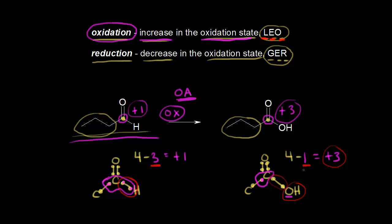There's also a shortcut you can use for this reaction. On the left, this carbon with an oxidation state of plus one has two bonds to oxygen. On the right, that same carbon now has three bonds to oxygen — so we've increased the number of bonds to oxygen. That can tell us we have an oxidation without going through all the oxidation state calculations. Notice we also lost a bond to hydrogen and replaced it with a bond to oxygen. So an increase in the number of bonds to oxygen, or a decrease in the number of bonds to hydrogen, tells you that your carbon is oxidized.